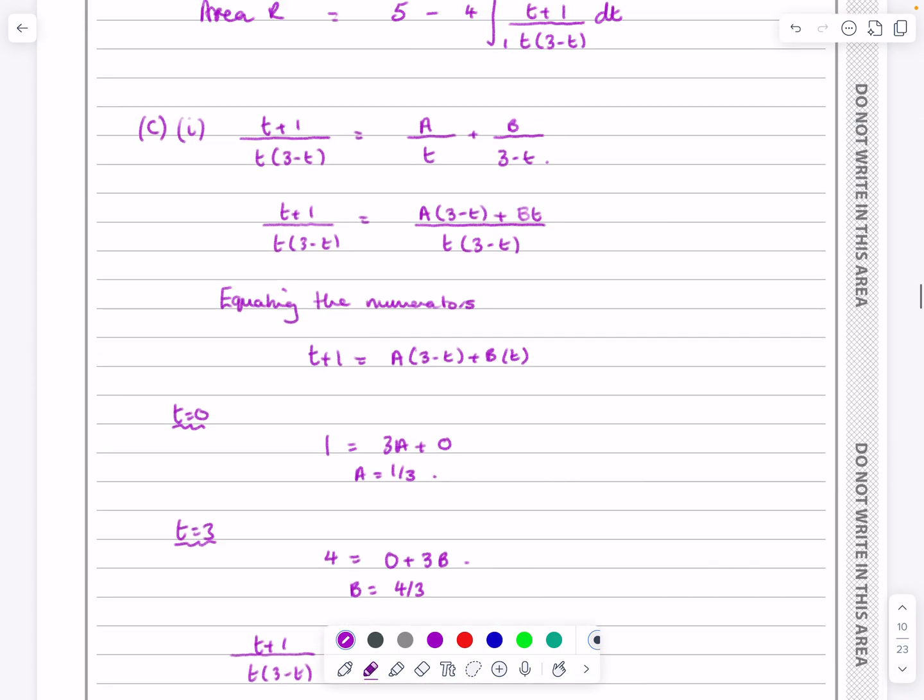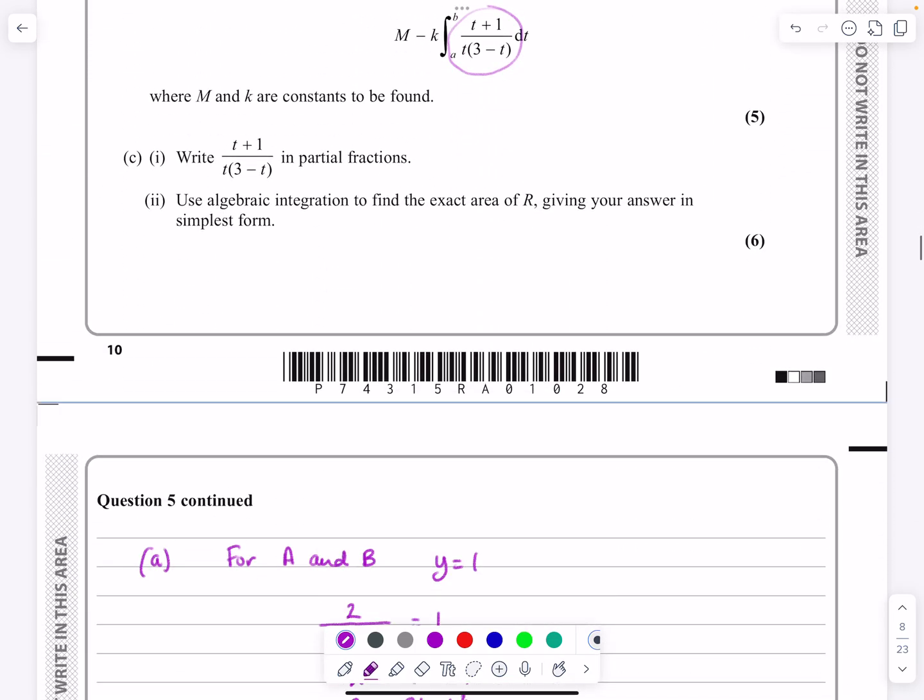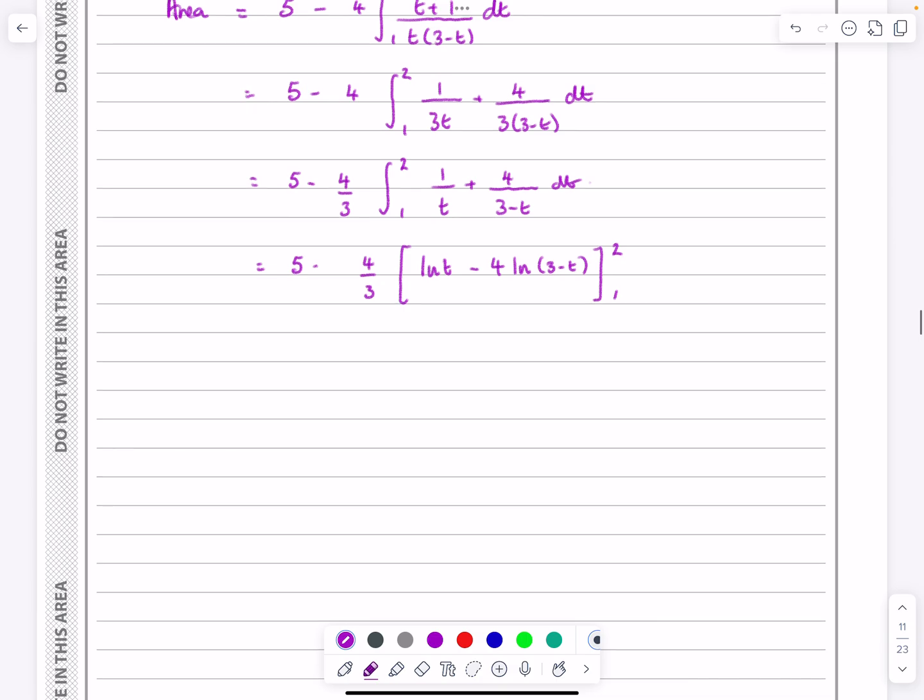And now we've just got to tidy this up to an answer. Just go back and quickly check, did they ask me to make it look like anything? No. So sometimes they'll say in a format, and they'll say you've got to have it in terms of log 2 or log 3 or whatever. So this is 5 minus 4 over 3. I'm going to put 2 in and I'm going to put 1 in. So if I put 2 in, I get log 2 minus 4 log 1. Well, log 1 is 0, so that's quite nice. Minus, and then I'm going to get log 1, which again is 0, minus 4 log 3 minus 1. So 4 log 2 here. So then tidying that all up, that's going to be 5 minus 4 over 3. I've just got 4 log 2 and 1 log. I've got 5 log 2 there.